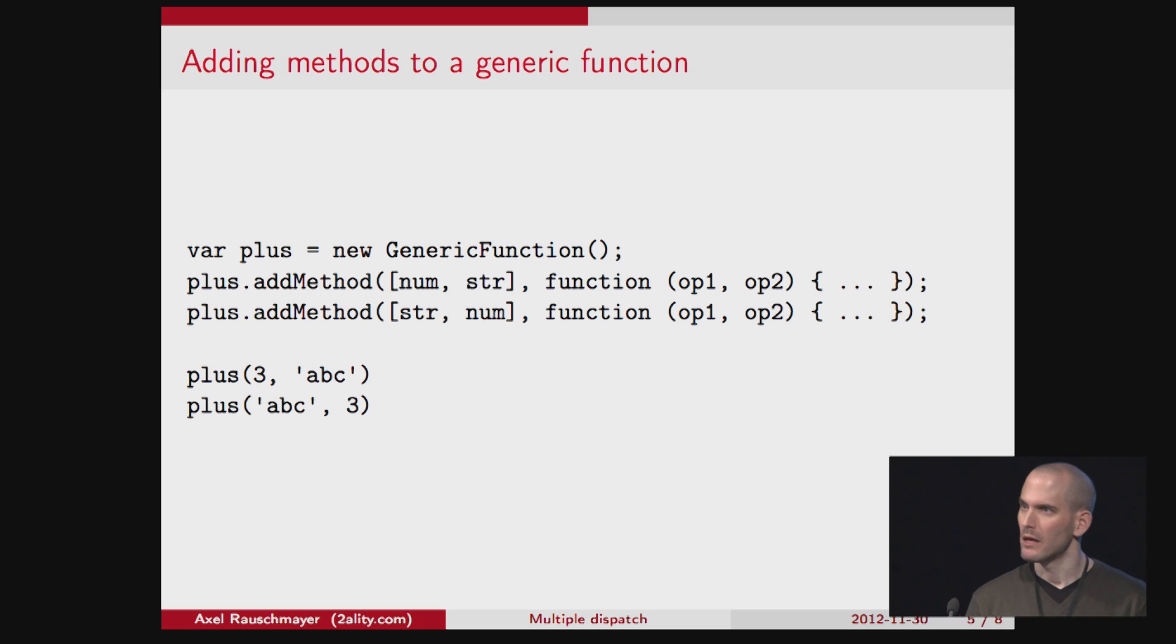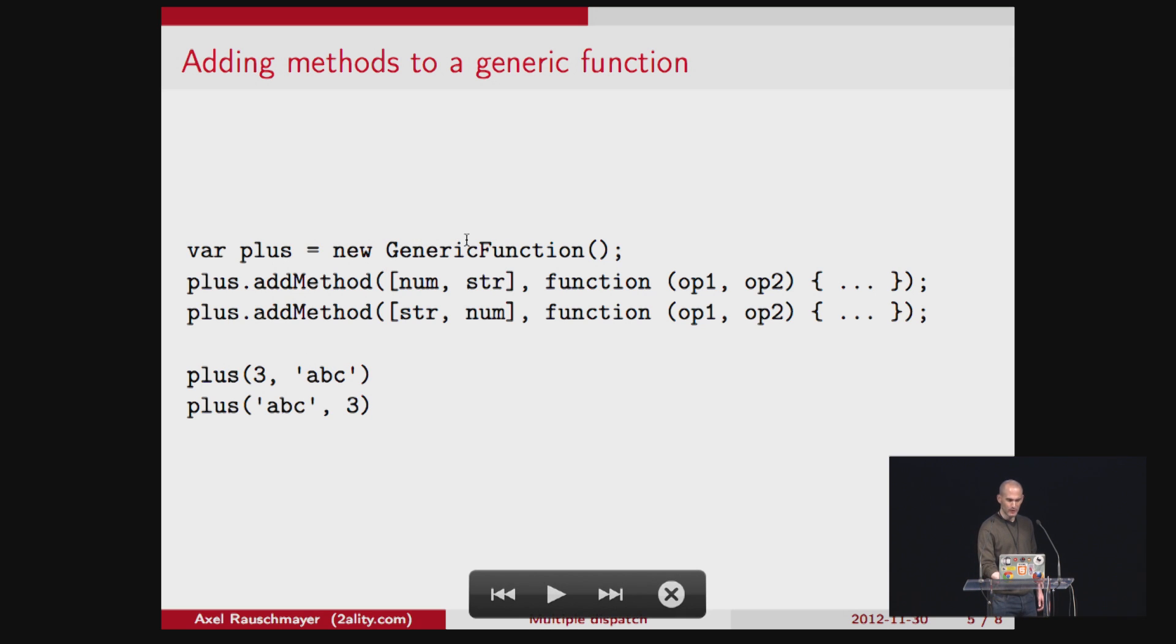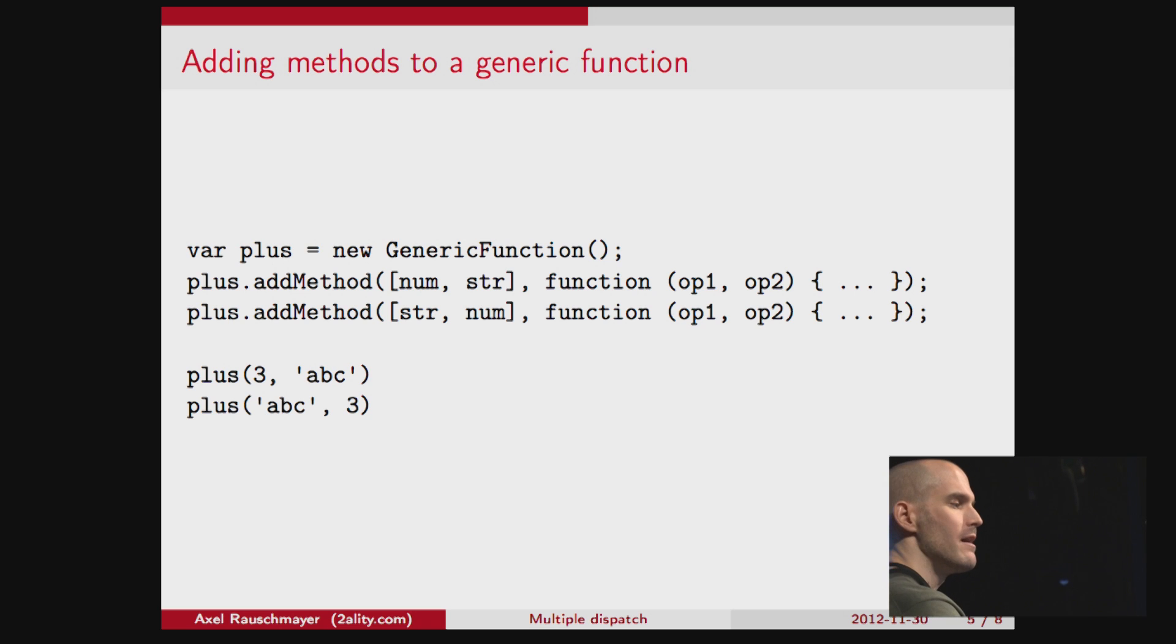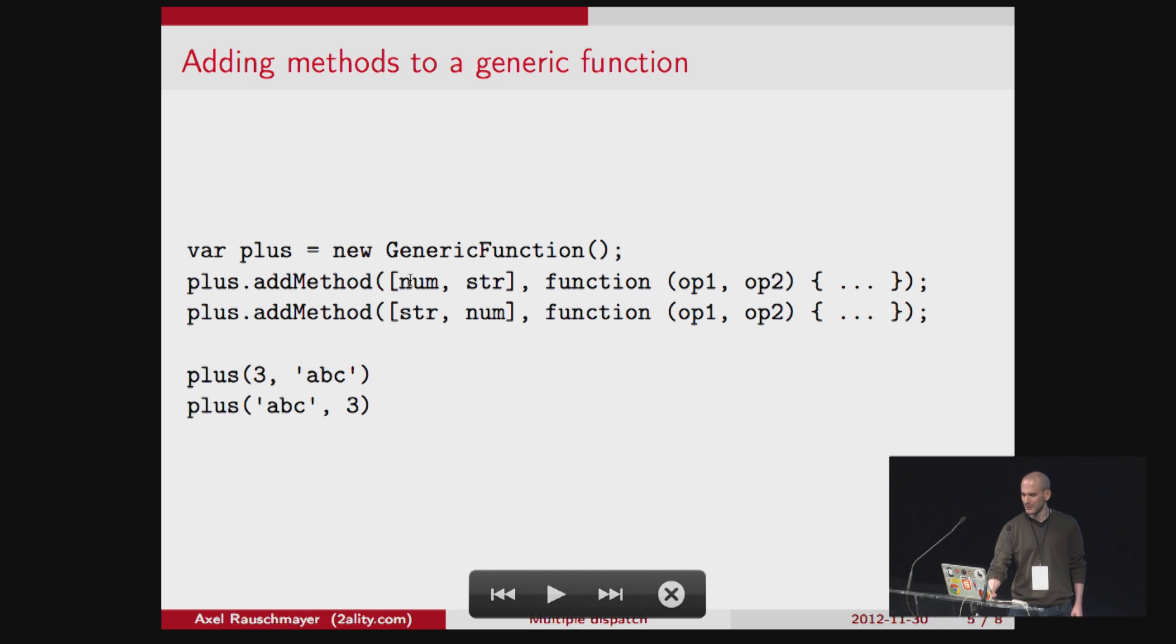So if you implemented multiple dispatch as a library in JavaScript, this is what it would look like. You would first create a generic function that's called plus. Then you would add two methods. And finally, you would invoke it just as you would any other function. And then the types of the parameters determine which of the two implementations are invoked when you make the call. And as you can see, it's like a table that maps function types or parameter types to methods.